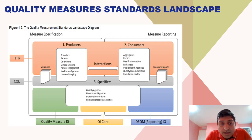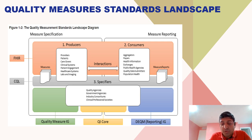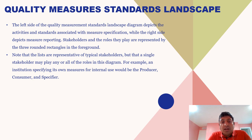If you look at the overall landscape, there are three core areas: we have FHIR, we have CQL, we have specifiers, and then we have three IGs that interact with each other — that includes the Quality Measurement IG, QI Core, and the DEQM Reporting IG. The left side of the quality measurement landscape diagram depicts the activities and standards associated with measure specification, while the right side depicts measure reporting.